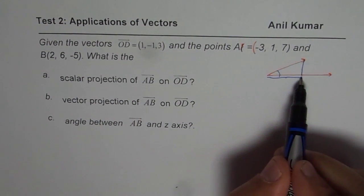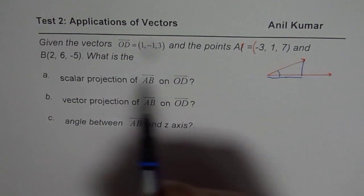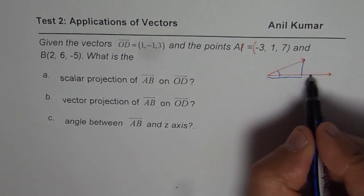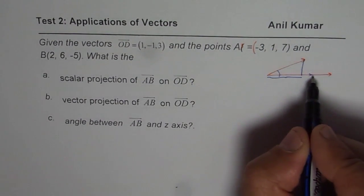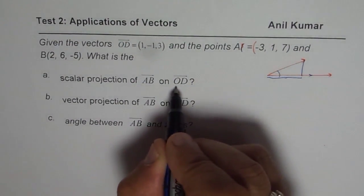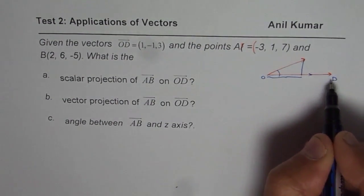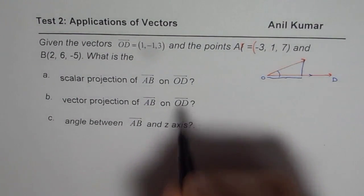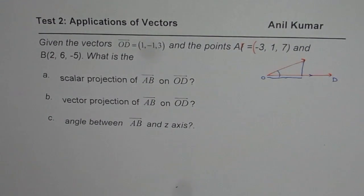Now if you only consider the length and not the direction, it becomes scalar projection. But if you multiply by the unit vector in the direction, in this case it is OD here, then it becomes vector projection. So that is scalar and vector projection.